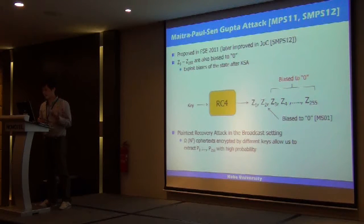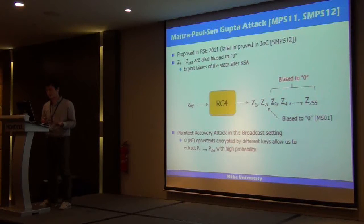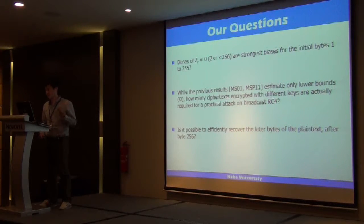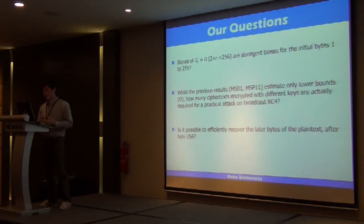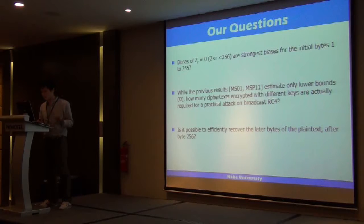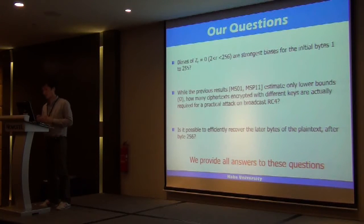We have seen the known plaintext recovery attacks. These are interesting attacks, but they seem to have limitations. When we considered the security of RC4 in the broadcast setting, we found several open questions. The first question is: are there biases other than the zero-bias used in the known attacks, and what is the strongest bias in the initial keystream bytes? The second question is: how many ciphertexts are actually required for the attack on broadcast RC4 — the known lower bound may not be tight. The last question is: is it possible to recover later bytes, not just the initial bytes?